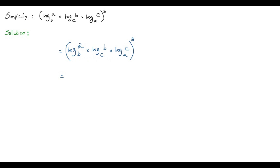To multiply 2 logarithms, I have to check whether the argument of the first logarithm and the base of the second logarithm are equal. They are not equal — the argument of the first logarithm is A and the base of the second logarithm is C, so they are not the same. Next, I check if the base of the first logarithm and the argument of the second logarithm are equal. They are equal — both are B.